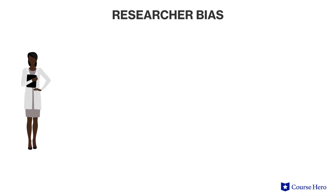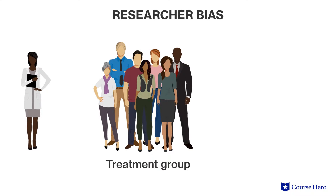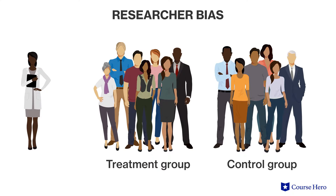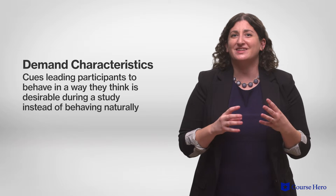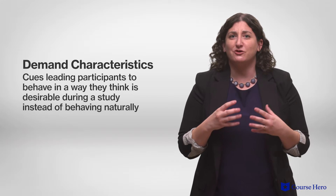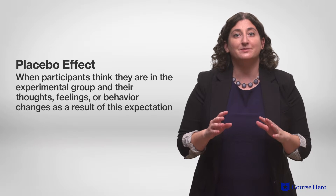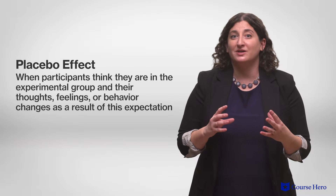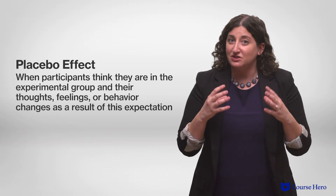For example, if a researcher hopes a treatment is effective, they may interact differently with the treatment group than the control group. Bias can also play a role for the participants themselves. Demand characteristics are cues leading participants to behave in a way that they think is desirable in a study, instead of behaving naturally. Relatedly, the placebo effect occurs when participants think they are in the experimental group, and their thoughts, feelings, or behaviors change as a result of this expectation.